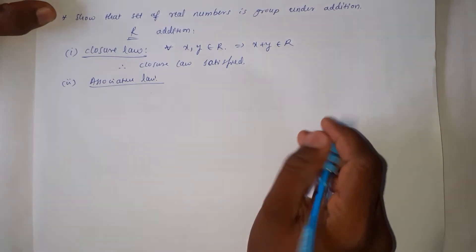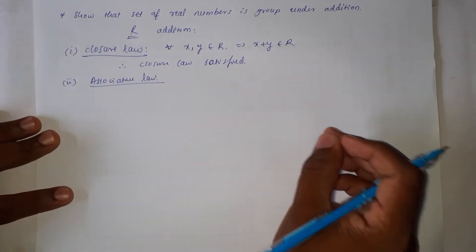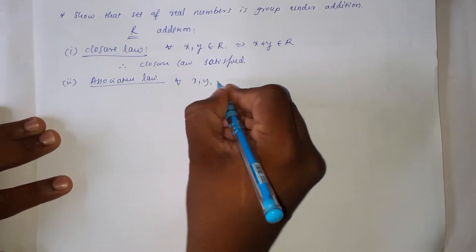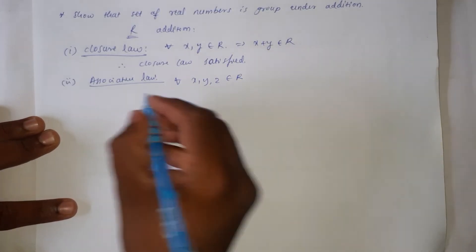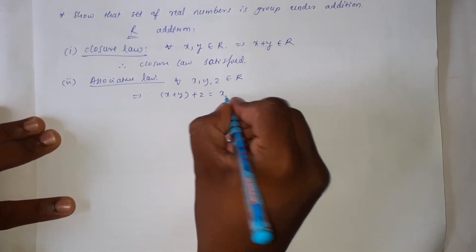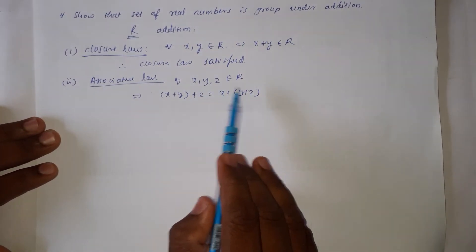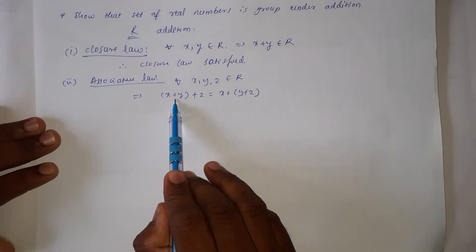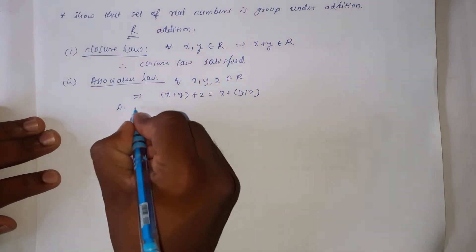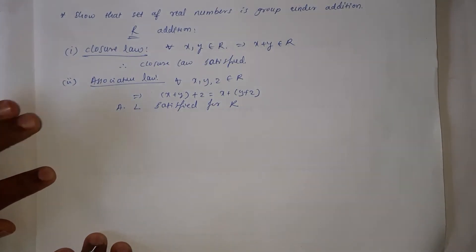The second one is the associative law. For any given set of numbers, if the binary operation is addition, then it follows the associative law. Therefore, for all x, y, z belonging to R, it implies (x + y) + z = x + (y + z). Hence, associative law is satisfied for the set of real numbers R.